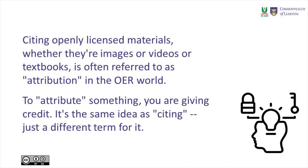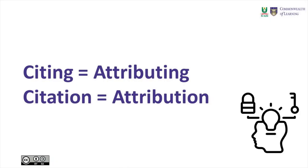To attribute something means you are giving credit. It's the same idea as citing, just a different term for it. As you can see on your screen, citing also refers to attributing, while citation is also the same as attribution. So you can cite or attribute openly licensed materials in different ways.